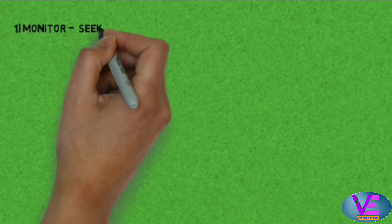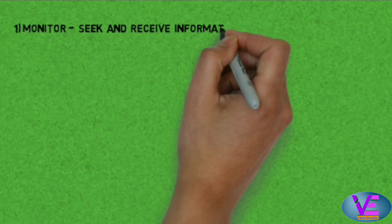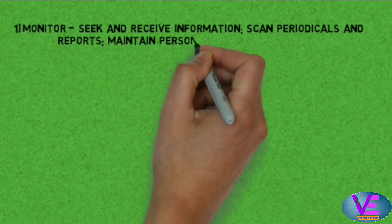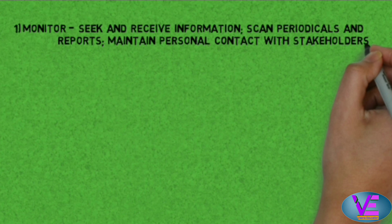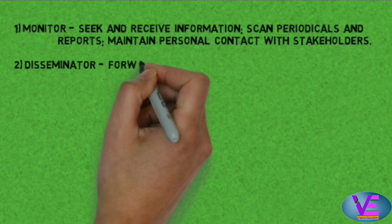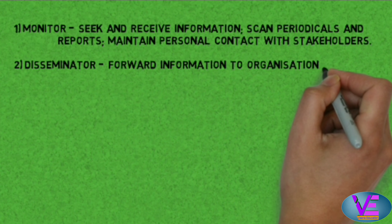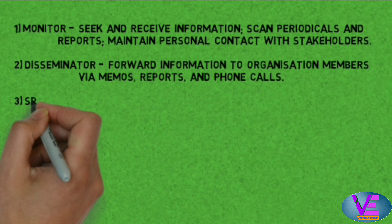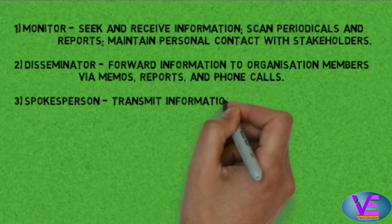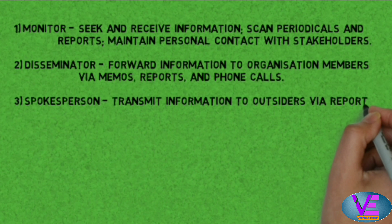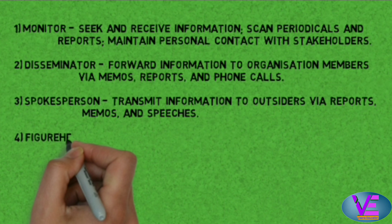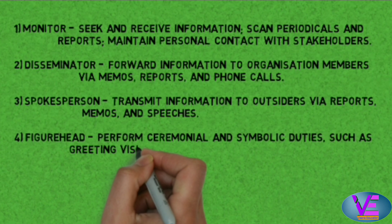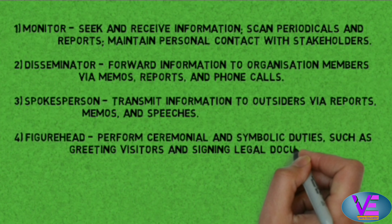Manager roles cover 10 tasks and responsibilities that a manager may need to perform. Monitor: seek and receive information, scan periodicals and reports, maintain personal contact with stakeholders. Disseminator: forward information to organization members via memos, reports, and phone calls. Spokesperson: transmit information to outsiders via reports, memos, and speeches. Figurehead: perform ceremonial and symbolic duties such as greeting visitors and signing legal documents.